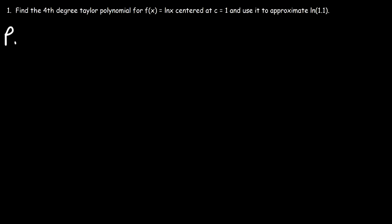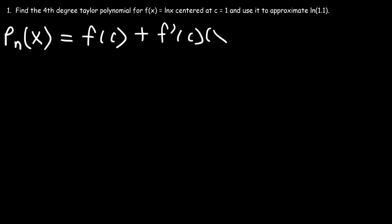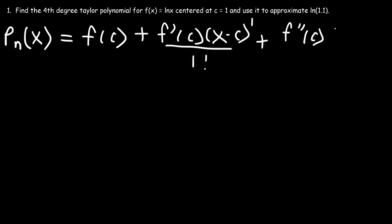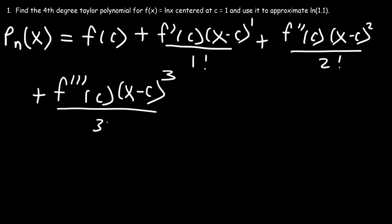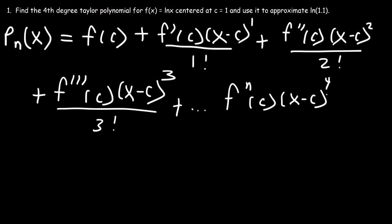Let's write a general formula for the nth degree Taylor polynomial. It equals f(c) plus f'(c) times (x - c) to the first power over 1 factorial, plus f''(c) times (x - c) squared over 2 factorial, plus the third derivative, and so on — you can see the pattern — continuing until we reach the nth derivative, where we stop.